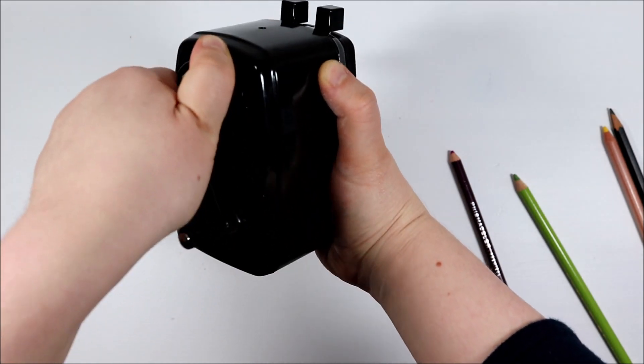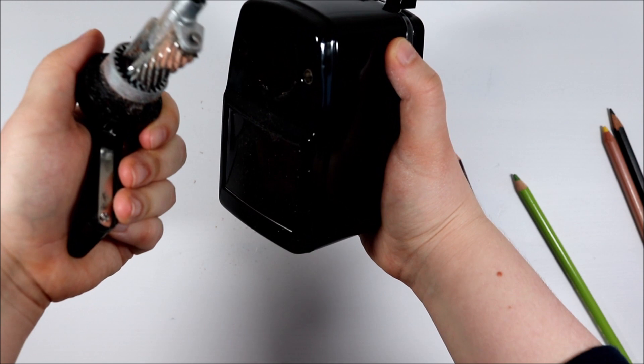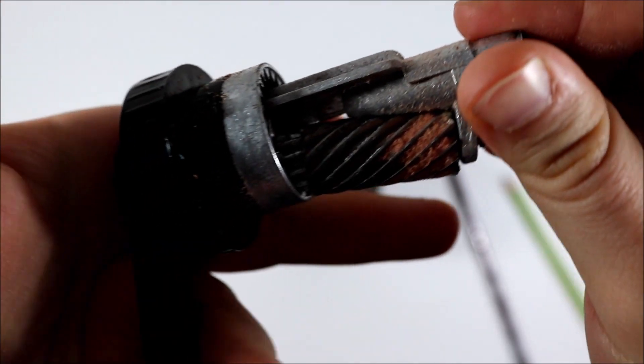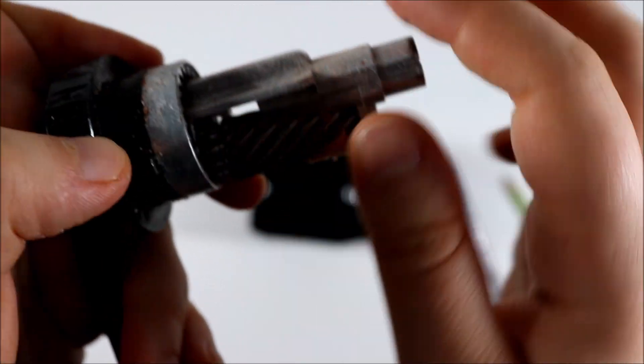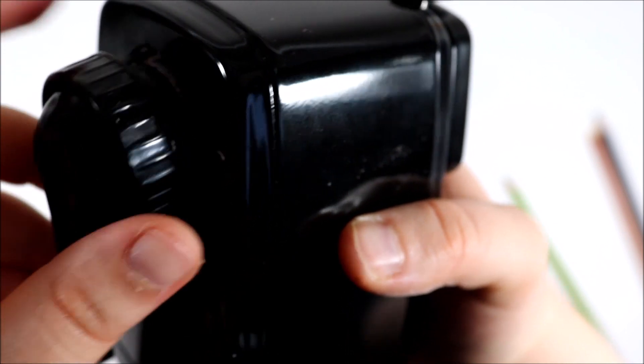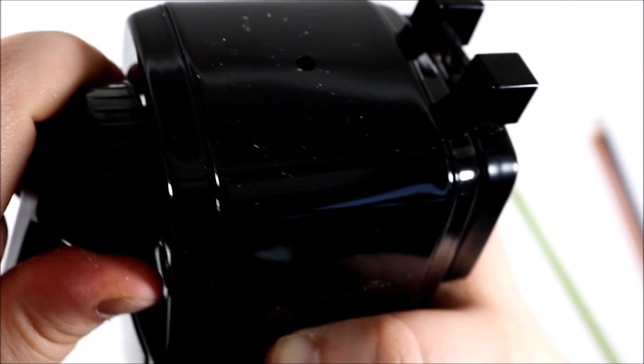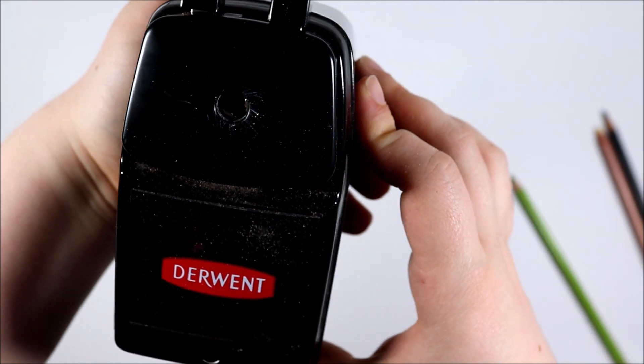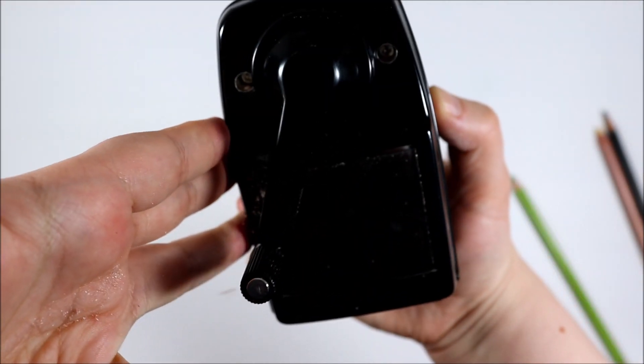So next we have the back of the sharpener where the crank is and if you want to clean out the side of the sharpener, say you've got a piece of lead stuck in the mechanism, you can turn that crank anti-clockwise and gently pull it away from the sharpener and then remove whatever is stuck. Then you just need to line up the crank and mechanism with the hole and push it back into the sharpener and turn to tighten. So really simple to take apart once you get the hang of it.